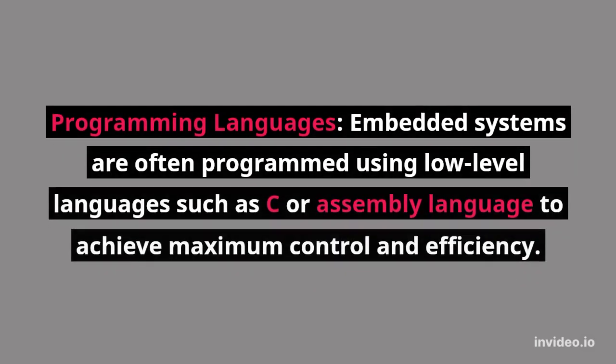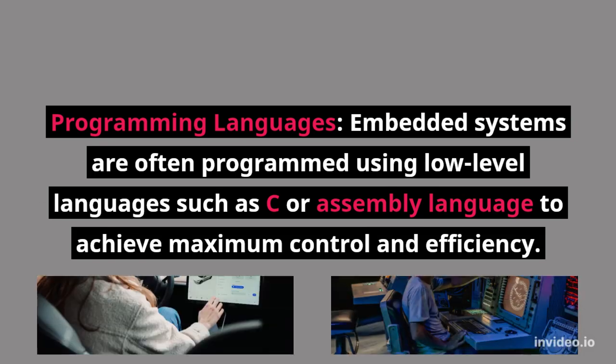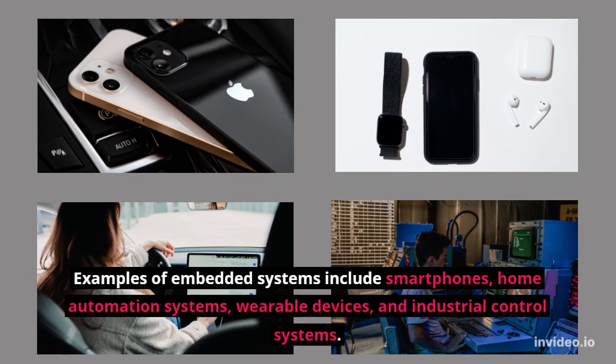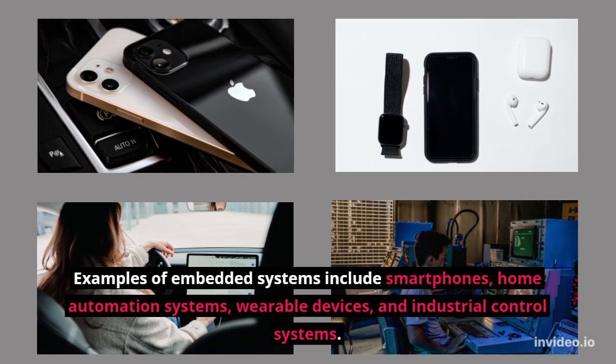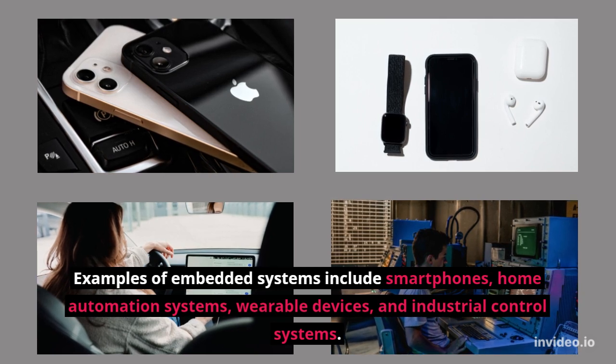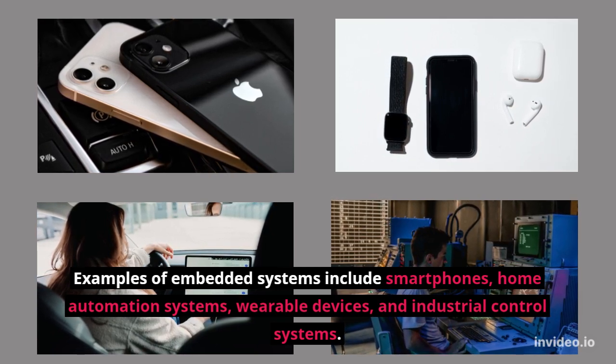Programming languages: Embedded systems are often programmed using low-level languages such as C or assembly language to achieve maximum control and efficiency. Examples of embedded systems include smartphones, home automation systems, wearable devices, and industrial control systems.